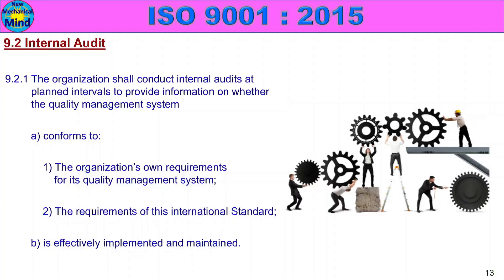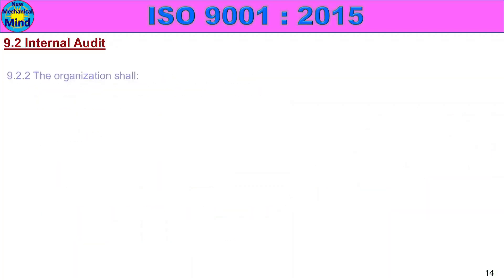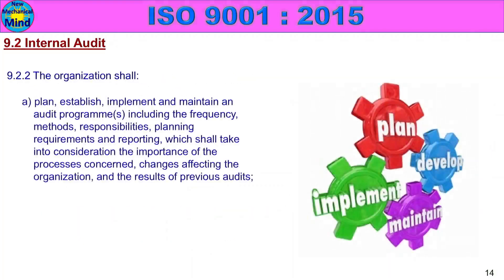The internal audit confirms that the quality management system is effectively implemented and maintained. 9.2.2: The organization shall plan, establish, implement and maintain an audit program or programs, including the frequency, methods, responsibilities, planning requirements and reporting, which shall take into consideration the importance of the processes concerned, changes affecting the organization, and the results of previous audits.